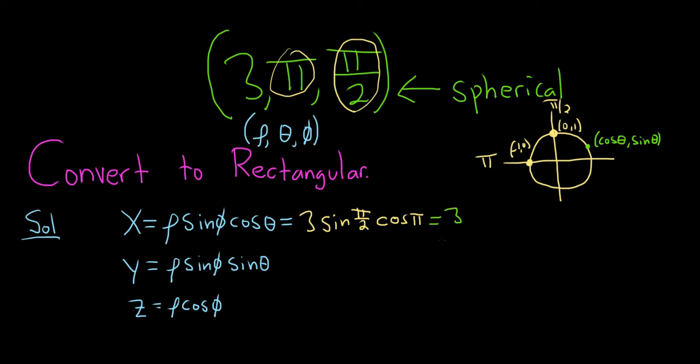So this is 3 times the sine of pi over 2. Well, that will be the y coordinate of pi over 2, which is 1, times the cosine of pi. That's the x coordinate at pi, which is negative 1. So we end up with negative 3.